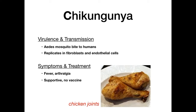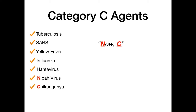That covers all category C agents and concludes the video. The way to master bioterrorism agents is the same as learning any microbiology: revisit the material repeatedly, memorize the key details, and use the mnemonics provided. At the very least, knowing these agents will serve you well if a bioterrorism question appears on your boards — and it'll make you sound impressively knowledgeable at family dinners.